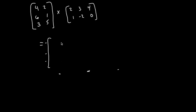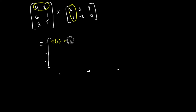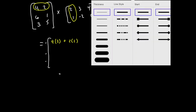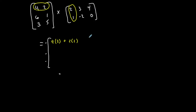In order to find the element in row one, column one, I'm going to take the first row of my first matrix and the first column of my second matrix. Then I multiply and add: four times two, plus two times one. So I'm going in a sense like this — four times two, and then two times one. This is going to be the first element in my final product.